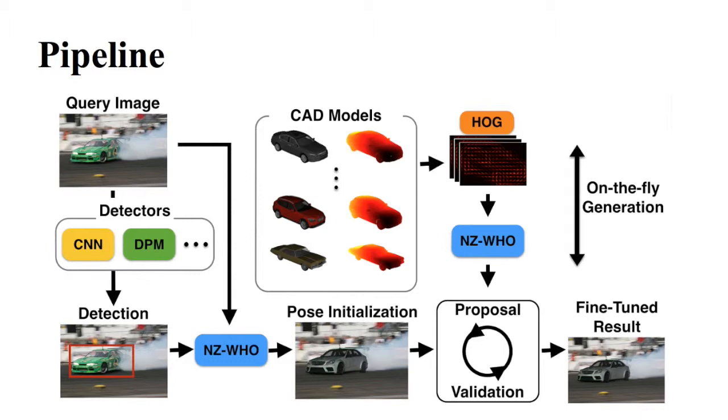First, given a query image, we get a detection bounding box from off-the-shelf detectors. Then, we run an ensemble of NZ-WHO templates generated from different viewpoints and various CAD models. This process generates a rough viewpoint estimation and the closest CAD model.